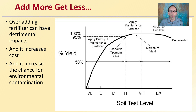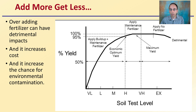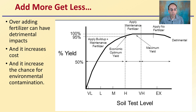Adding more and getting less — this graph shows that over-applying fertilizer can have detrimental impacts in addition to just increasing cost to the grower. It also increases the chance for environmental contamination and can reduce yields.